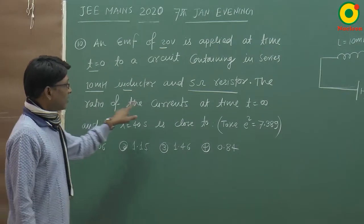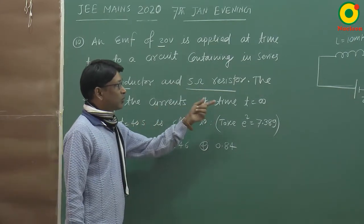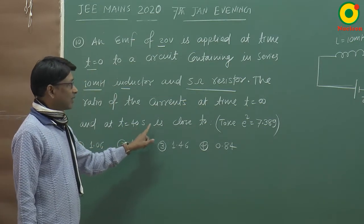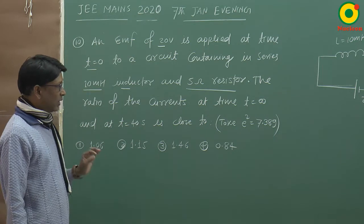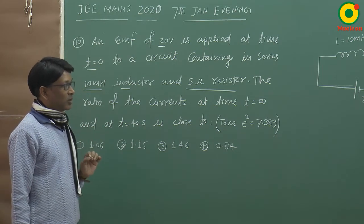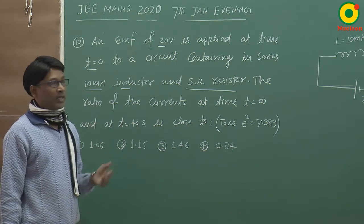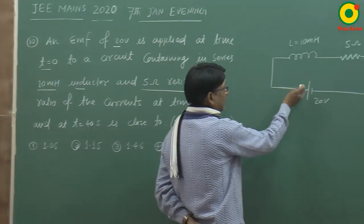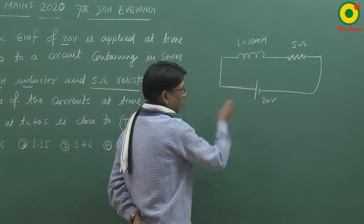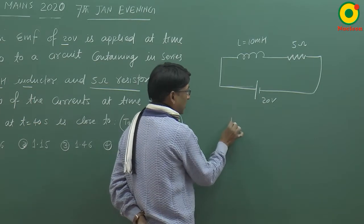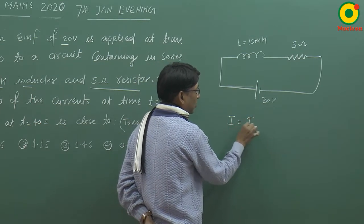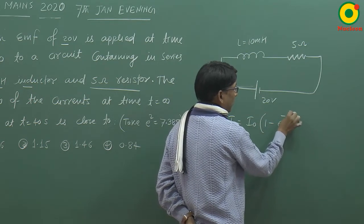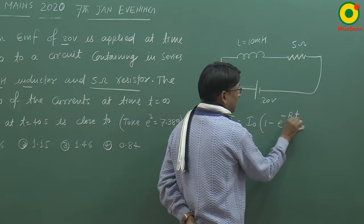The ratio of the currents at time t=∞ and at t=40 second is close to. t=∞ पर saturation आ जाता है, current maximum होता है। हम लोग जानते हैं कि inductor का जब charging होता है, इसमें current का growth होता है। तो equation लेते हैं: i = i₀ (1 - e^(-Rt/L))